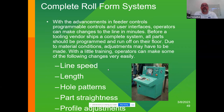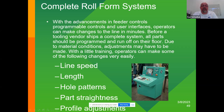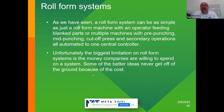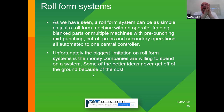With the advantages of modern programmable controls and user interfaces, operators can make changes in-line in minutes. Before tooling and vendor ships a complete system, all parts should be programmed to run on the floor. With little training, operators can make the following adjustments very easily: line speed, length, hole pattern, straightness, and profile adjustments. Systems can be as simple as just a roll form machine with an operator feeding a blank, or as complex as machines with punching, mid-punching, cutoff presses, secondary operations, and automated central control. Unfortunately, the biggest limitation on roll form systems is often the money companies are willing to spend and what the ROI is on these systems.